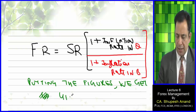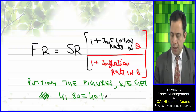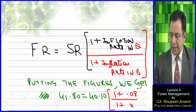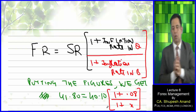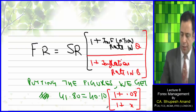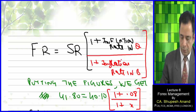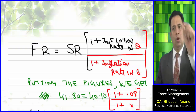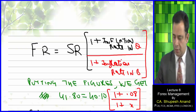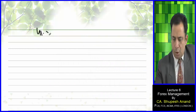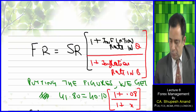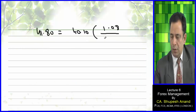41.80 is equal to 40 multiplied by (1 plus 0.08) divided by (1 plus x). Solving the above equation: 41.80 is equal to 40 into 1.08, divided by (1 plus x).